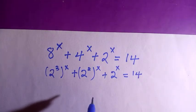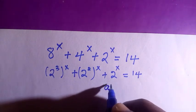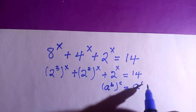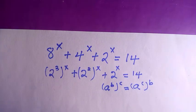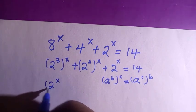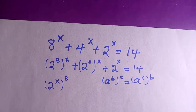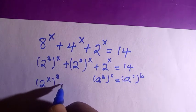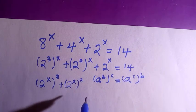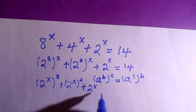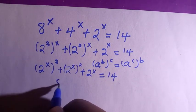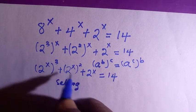We have a rule for indices: if you have a raised to power b, raised to power c, this equals a raised to the power of b times c. Applying it here, we have 2 to the power of x raised to the power of 3, plus 2 to the power of x raised to the power of 2, plus 2 to the power of x, all equal to 14.